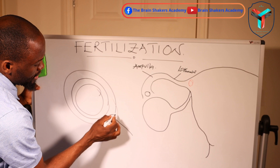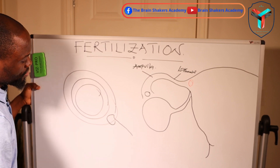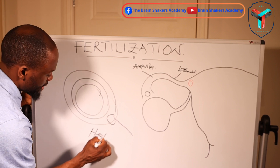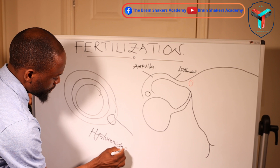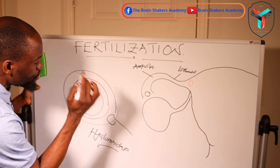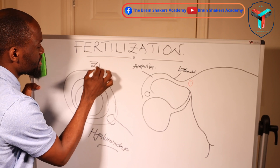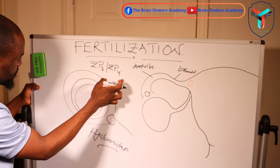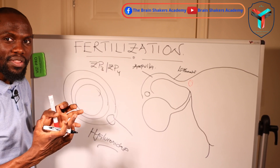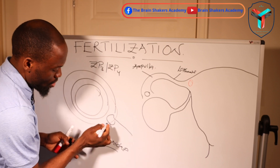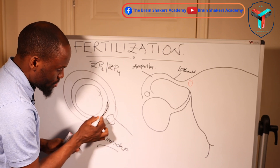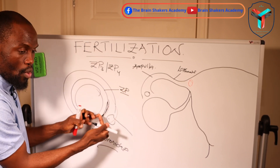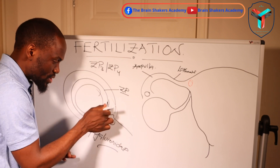Once the spermatozoa binds to the corona radiata, it produces an enzyme called hyaluronidase. This enzyme causes a conformational change in zona pellucida proteins ZP3 and ZP4, which facilitate the attachment of the spermatozoa to the zona pellucida.